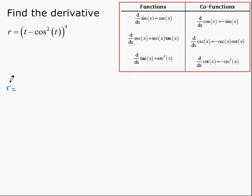To differentiate, we need to use the chain rule, starting with our outside function, which in this case is the exponent. So we bring the exponent down, 4 times t minus cosine squared of t, and we subtract 1 from the exponent to give 3.